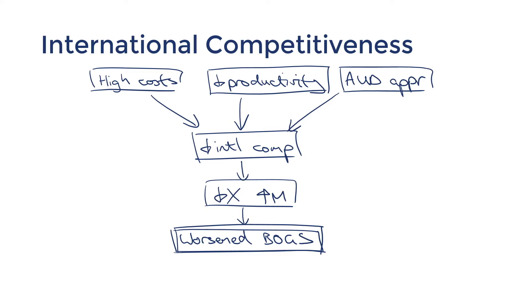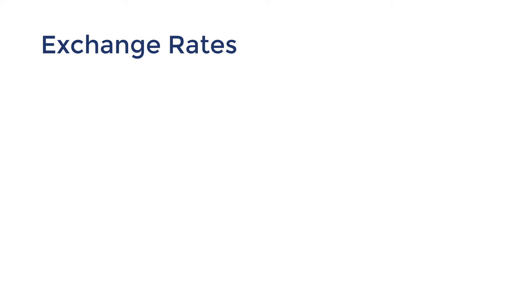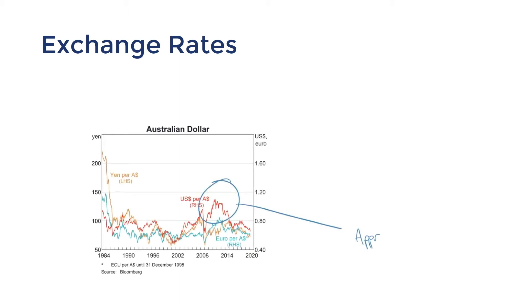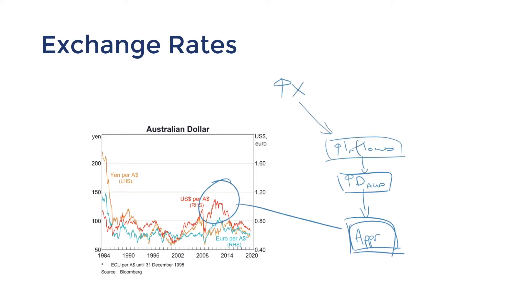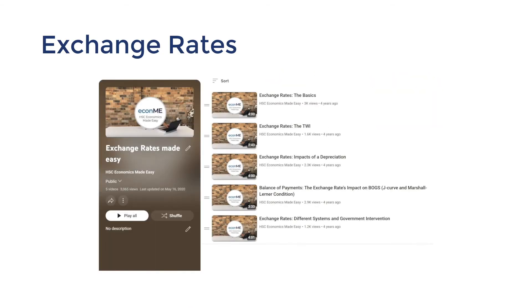Another aspect of external stability that we must explore is exchange rates. The exchange rate refers to the value of Australia's dollar expressed in relation to another country's currency. Similarly to the trends in the current account, trends in Australia's exchange rate have mostly been driven by demand for commodity exports and Australia's interest rate differentials. Check out my playlist on exchange rates for more detail.